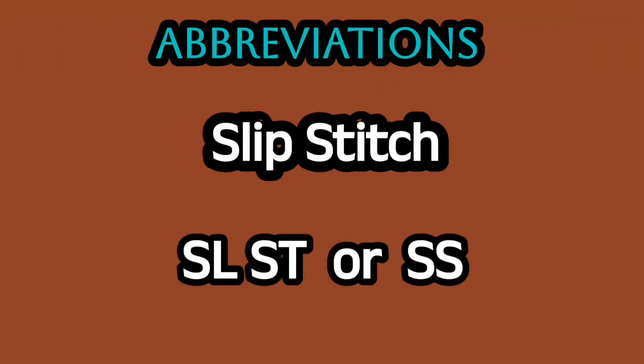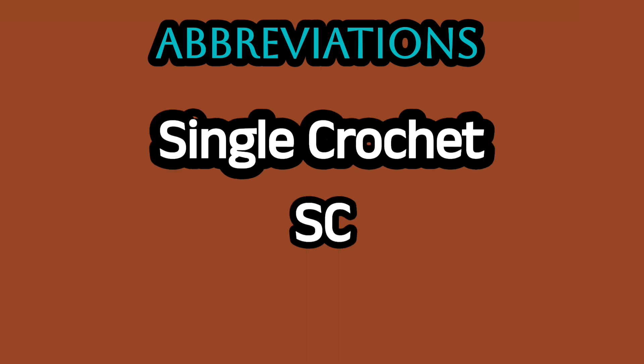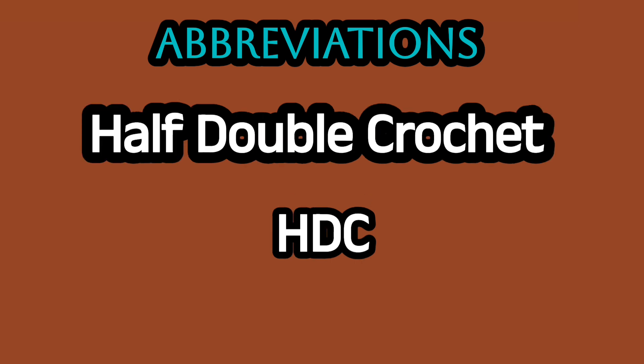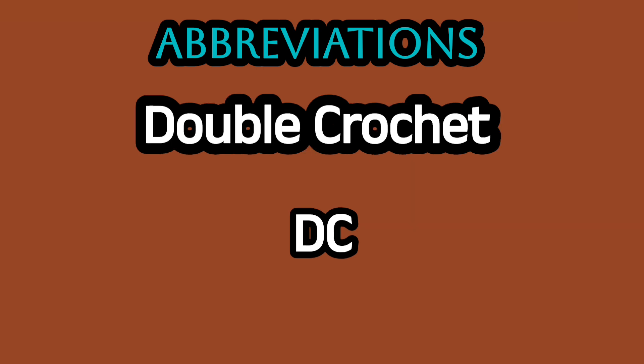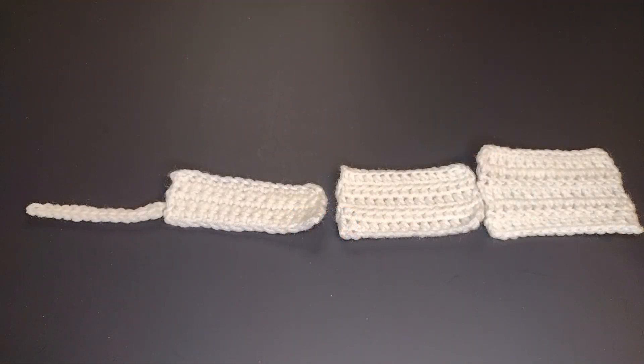These stitches are going to be abbreviated in patterns. The abbreviation for a slip stitch is SLST or SS. The abbreviation for a single crochet is SC. The abbreviation for a half double crochet is HDC, and the abbreviation for a double crochet is DC. Most of your patterns are going to be written with abbreviations, so this is just a good thing to learn.